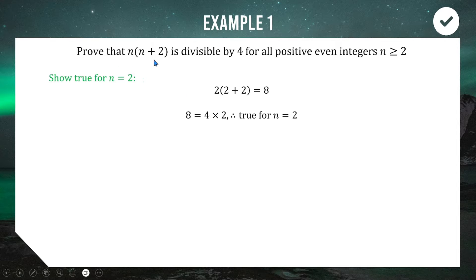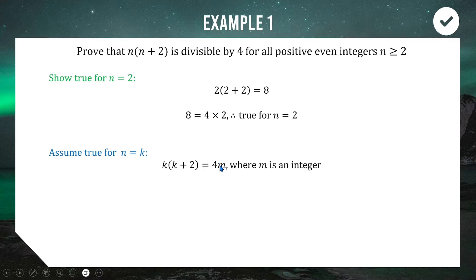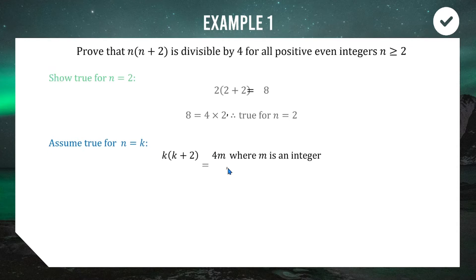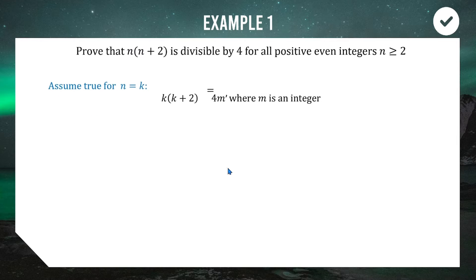For the assumption step, we assume that when n equals k, the expression k(k+2) is divisible by four. We write this as k(k+2) = 4m, where m is an arbitrary integer. We use m rather than n or k since those are already taken by the question. This is our inductive hypothesis — a multiple of four.